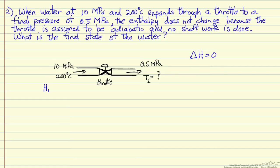So we can look up H1 in the steam tables, 855.8 kJ per kg. This is actually for a compressed liquid, so pressure is significantly higher than saturation pressure. The saturation pressure at this temperature is 1.55 MPa.